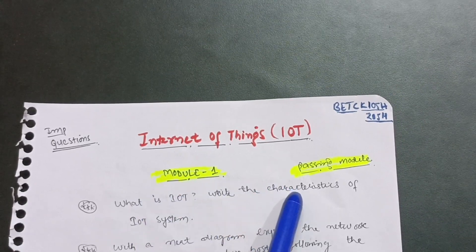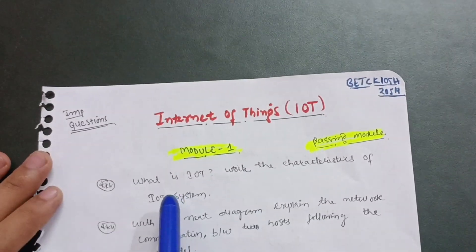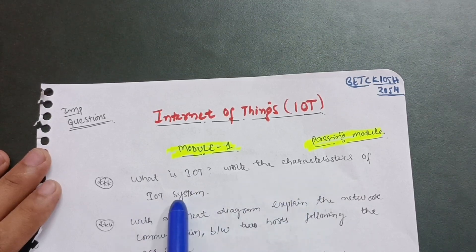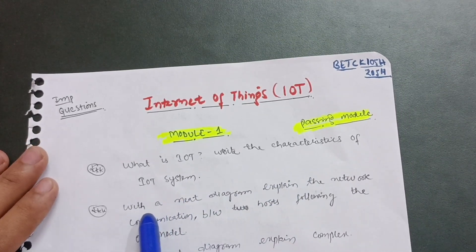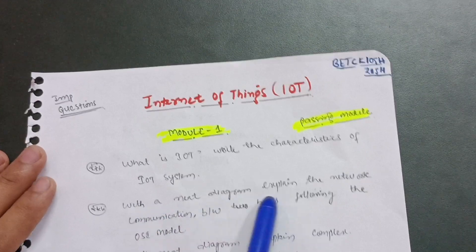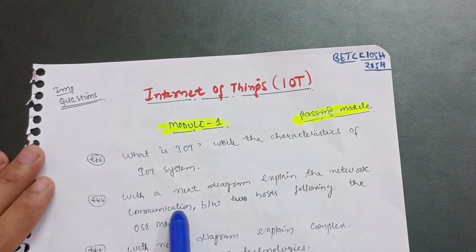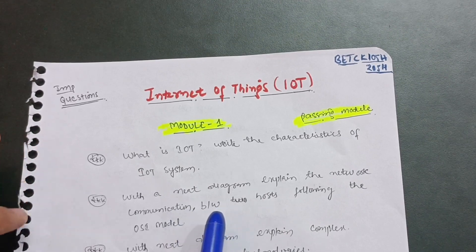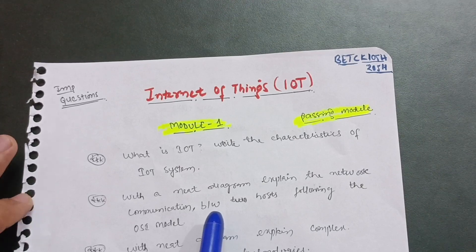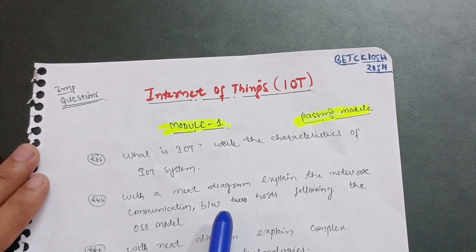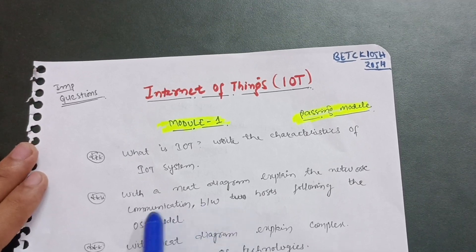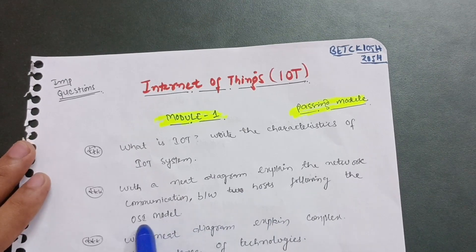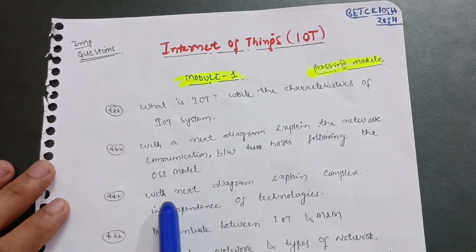Let us start with the first module, which is a passing module. In this you have to cover: what is Internet of Things, what is IoT, write the characteristics of an IoT system. The next important question is — with a neat diagram, explain the network communication. It is a diagrammatic subject, so you have to focus on diagrams more than theory. With a neat diagram, explain the network communication between two hosts following the OSI model.